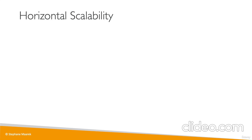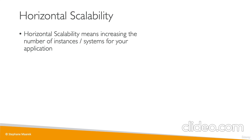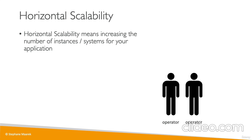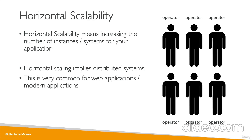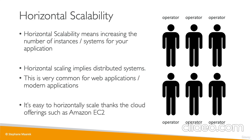Horizontal scalability means instead of increasing the size of your EC2 instance, you increase the number of instances or systems. In our call center, we add another operator to handle more calls — scaling from one operator all the way to six. Horizontal scaling implies a distributed system, and it's very common for web applications. It's super easy on AWS thanks to Amazon EC2 and auto scaling groups.